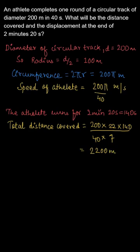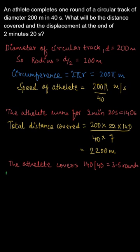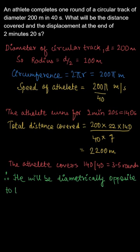Now since the athlete is taking 40 seconds to complete one round and he is traveling for 140 seconds, he will be completing 3.5 rounds. That means his starting point and the ending point will be exactly diametrically opposite. So the displacement of the athlete will be the diameter of the circle.